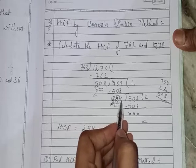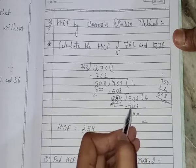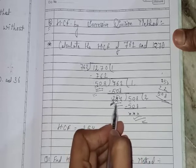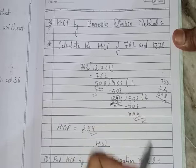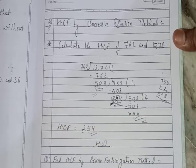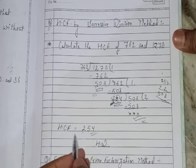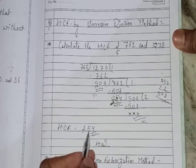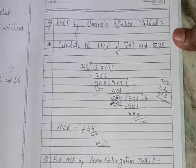254 to the 508, so the remainder will be 0. It means the last remainder that divides the number completely without leaving any remainder, that number will be the HCF. So 254 will be HCF.